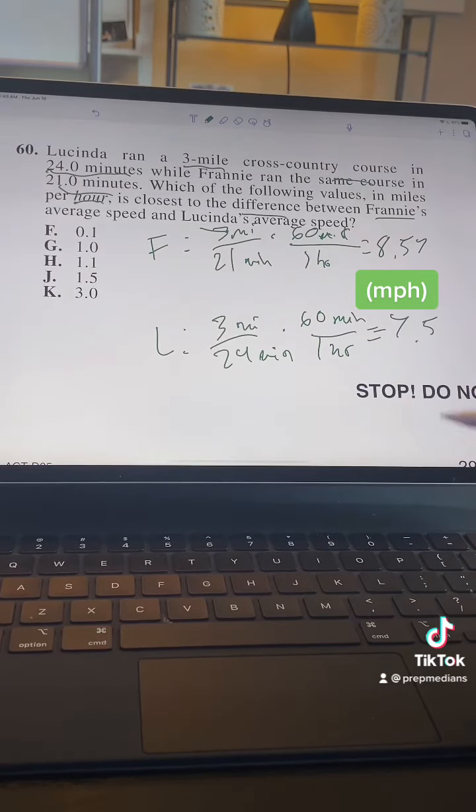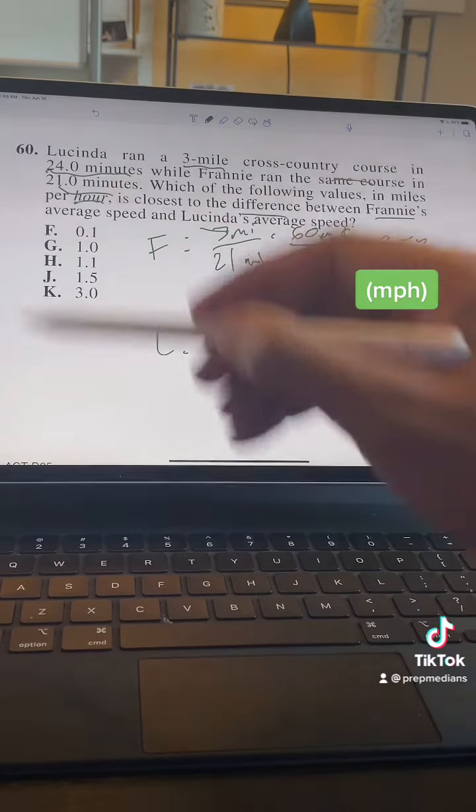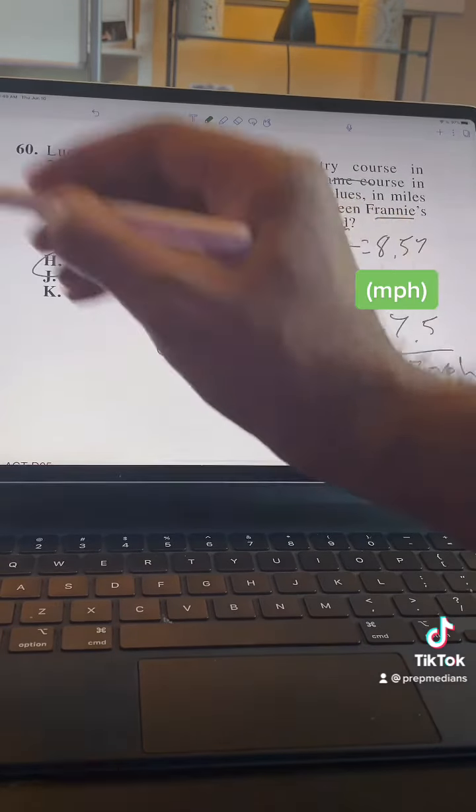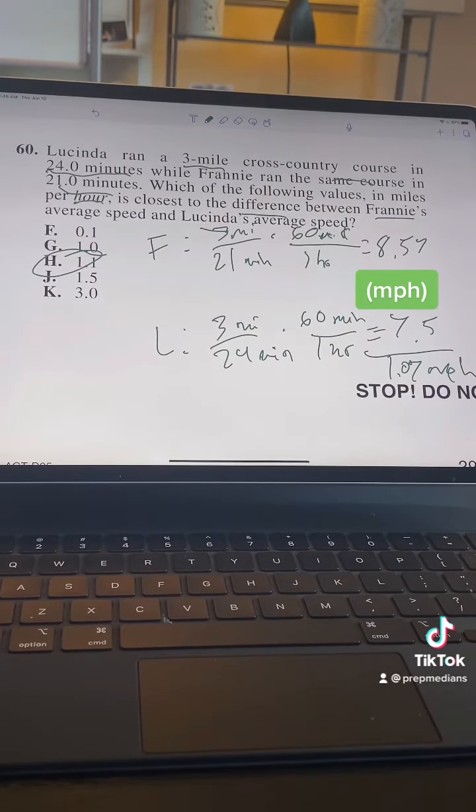Now all we're going to do is subtract these two. We're going to get 1.07 miles per hour, as the question asks for, which rounds up to our answer, H. And just like that, my friends, we are off to the races.